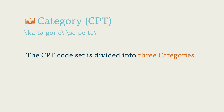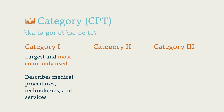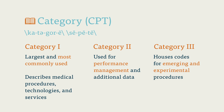Category CPT. The CPT code set is divided into three categories. Category 1, which is the largest and most commonly used, describes medical procedures, technologies, and services. Category 2 is used for performance management and additional data. Category 3 houses the codes for emerging and experimental medical procedures and services.